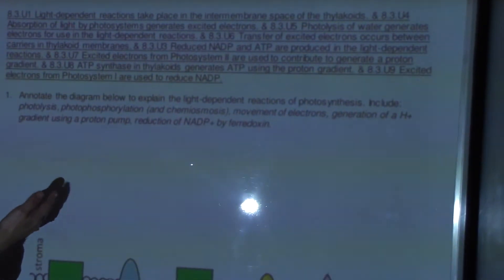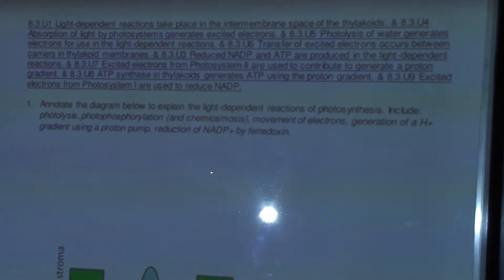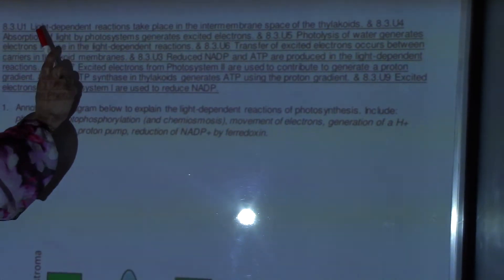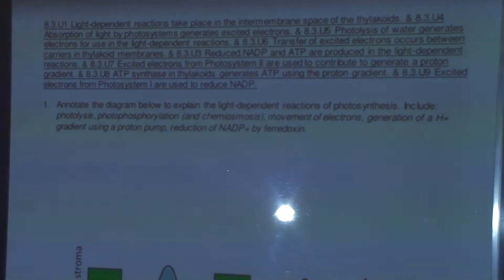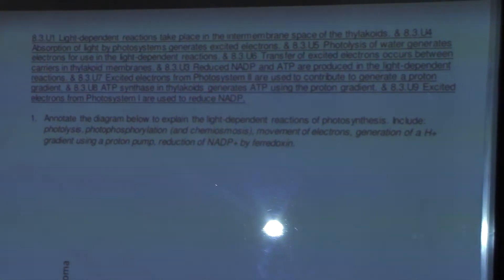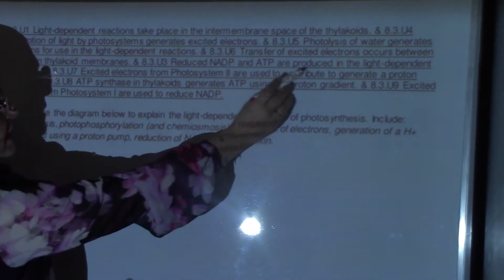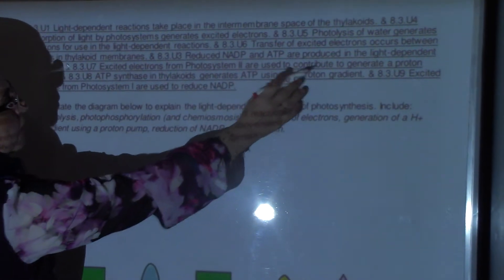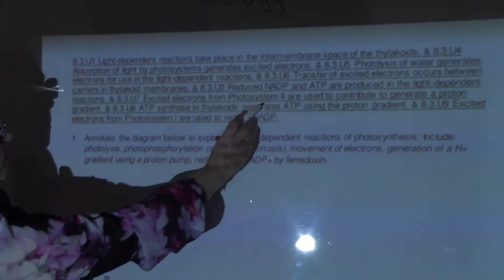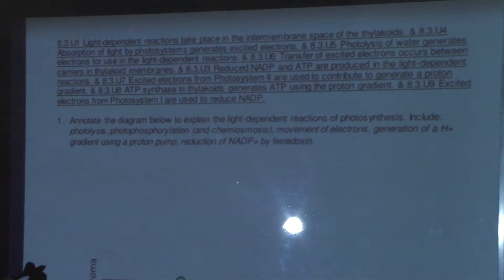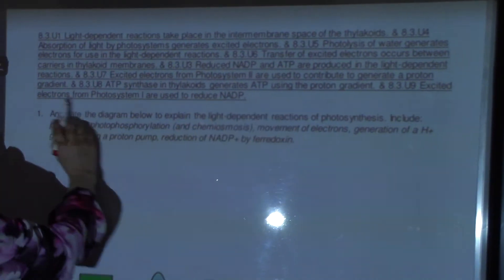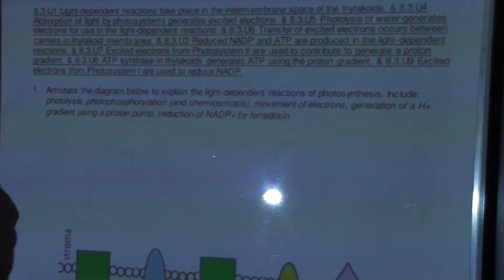Good afternoon, guys. Now we will solve some questions on photosynthesis, covering topic 8.3. Remember, the objectives of the lesson: light-dependent reactions take place in the inter-membrane space of thylakoids. Absorption of light by photosystems generates excited electrons. Photolysis of water generates electrons for use in light-dependent reactions. Transfer of excited electrons occurs between carriers in the thylakoid membranes. Reduced NADP and ATP are produced in the light-dependent reactions. Excited electrons from photosystem II contribute to generating a proton gradient. ATP synthase in the thylakoid generates ATP using the proton gradient, while excited electrons from photosystem I are used to reduce NADP.